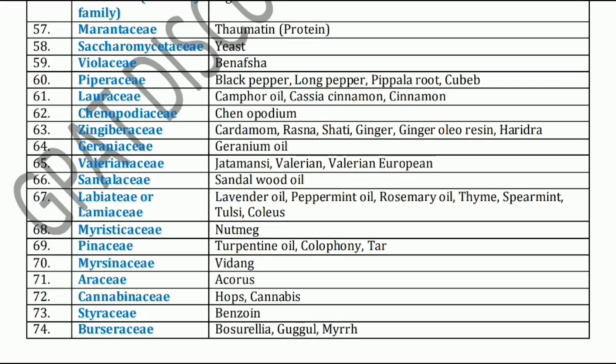Next, Chenopodiaceae family. Chenopodiaceae family includes Chenopodium. Next, Zingiberaceae family. Zingiberaceae family includes Cardamom, Rasna, Seti, Ginger, Ginger oleoresin, and Haridra. Next, Geraniaceae family. Geraniaceae family includes Geranium oil.